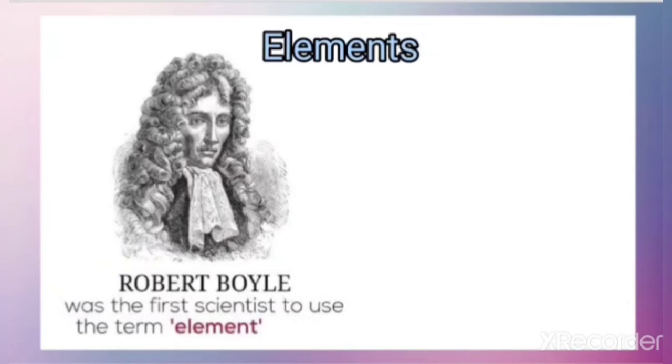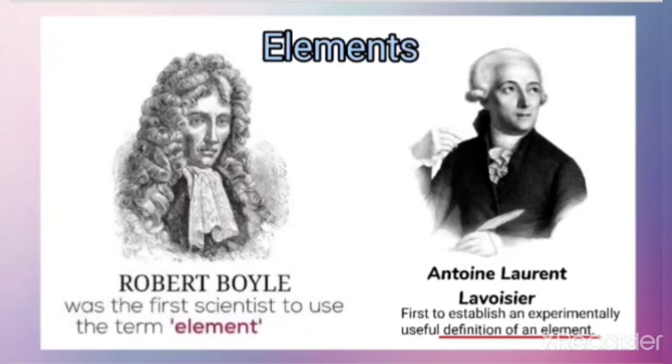Robert Boyle was the first scientist to use the term element in 1661, but another chemist, a French chemist called Lavoisier, was the first person to establish an experimentally useful definition of an element.